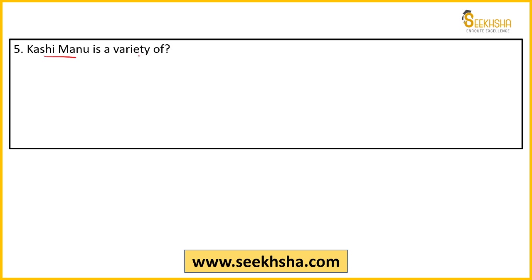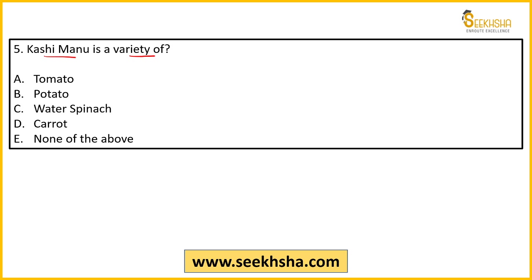Fifth question: Kashi Manu — what is it a variety of? Options are: tomato, potato, water spinach, carrot, or none of the above. Again, you can only answer this if you have specifically read about it, because there are so many varieties that you cannot remember all of them. However, this was specifically mentioned in the ICAR magazine, which is why we are covering it.